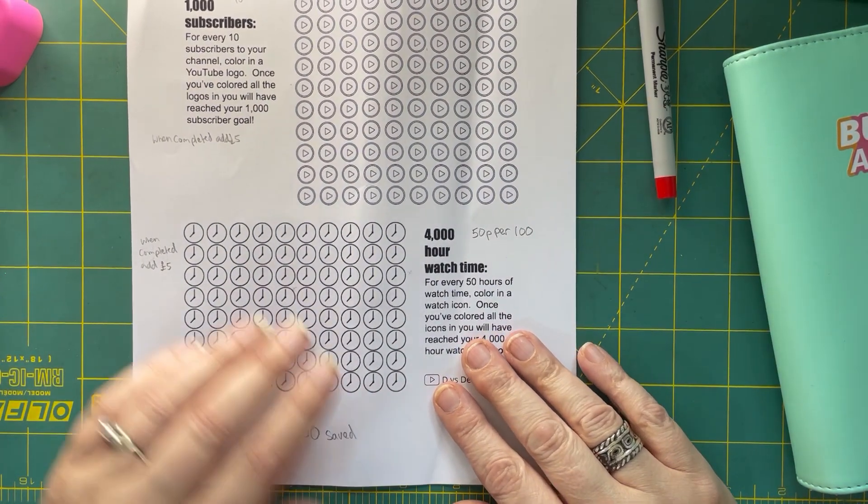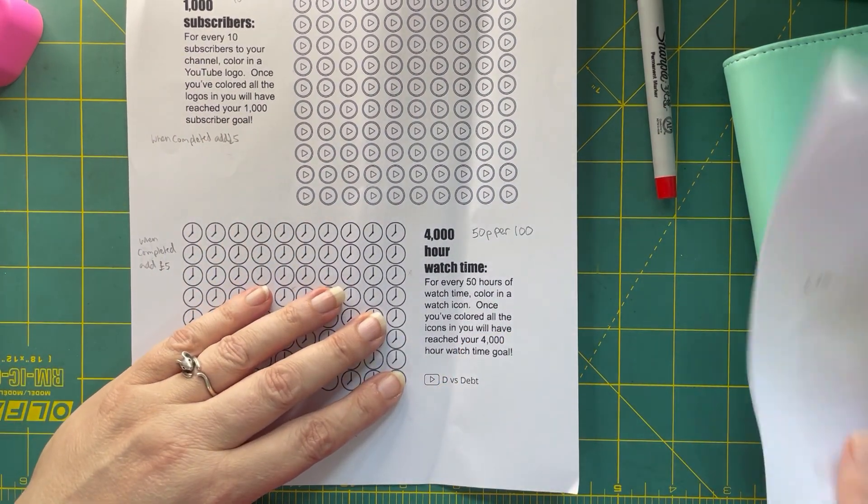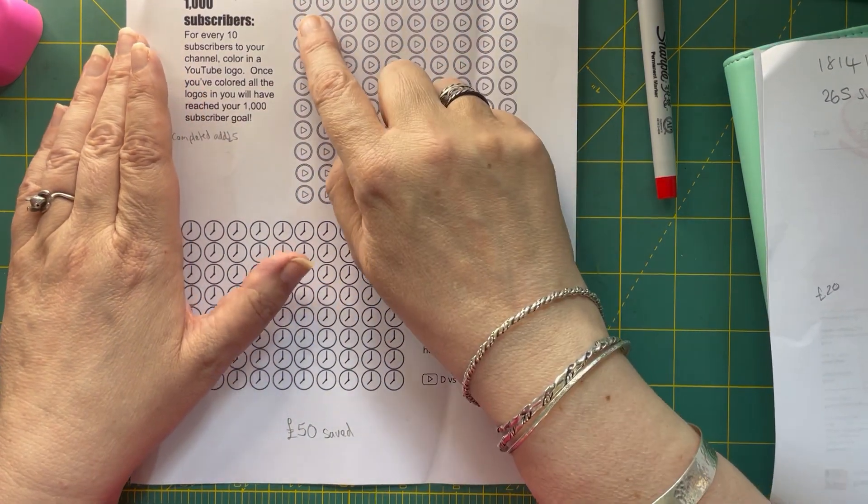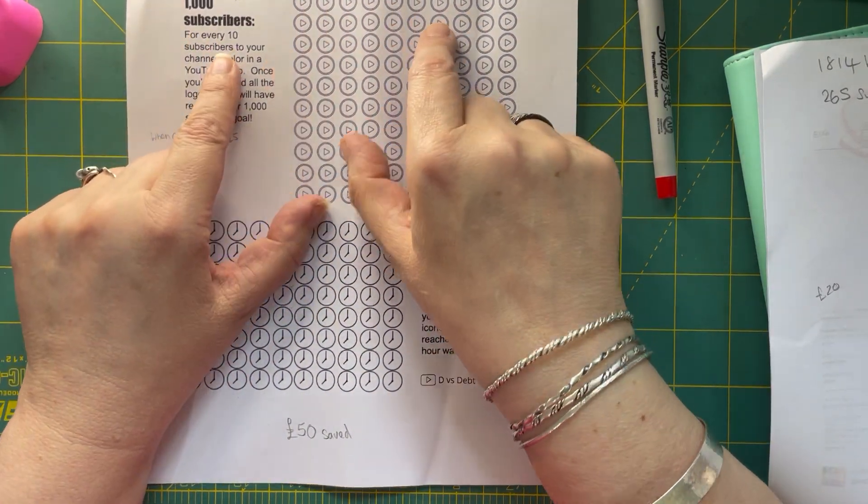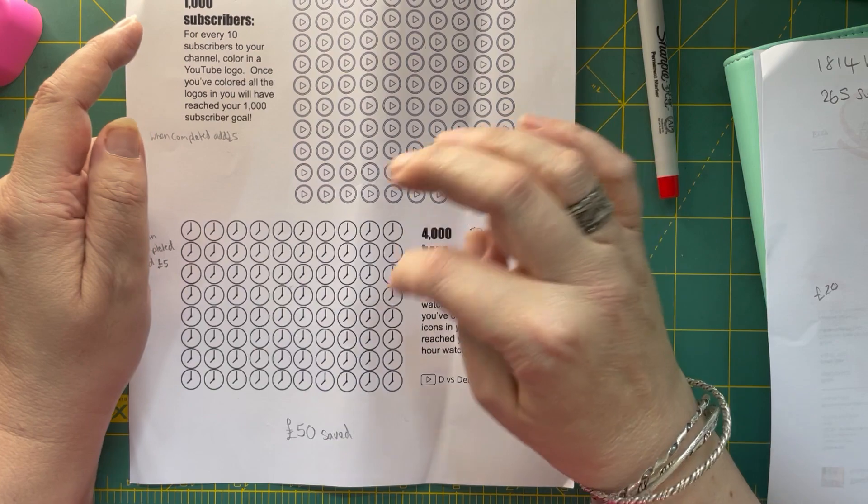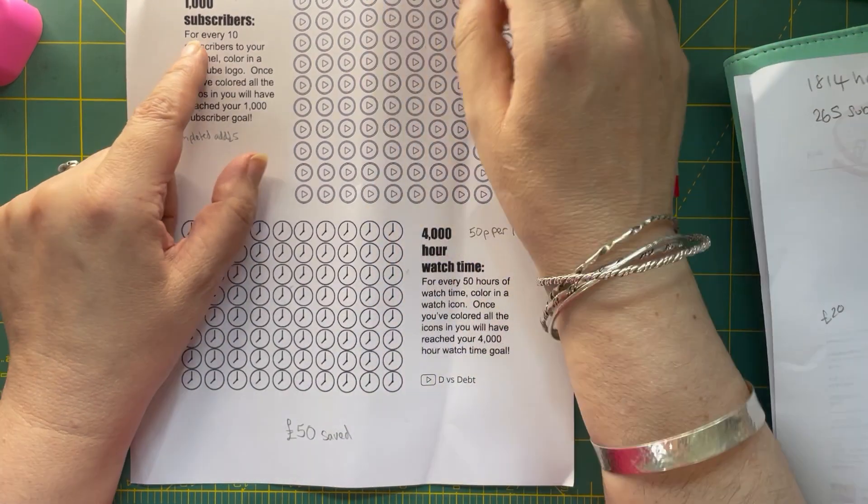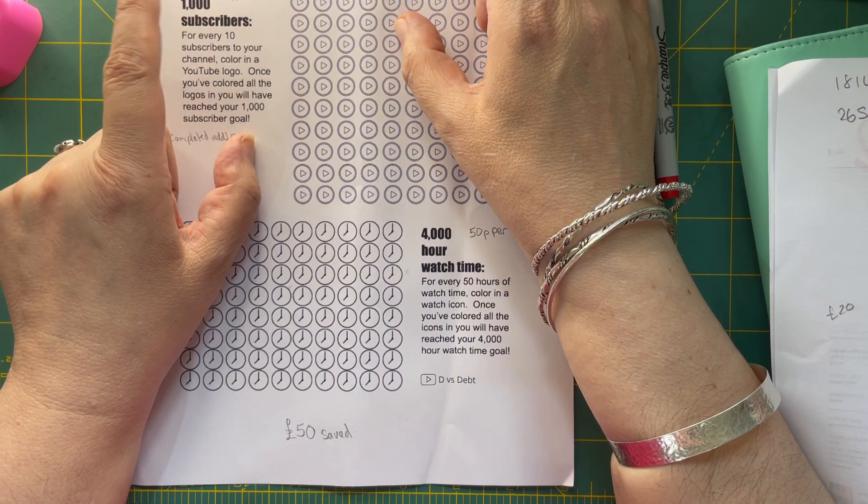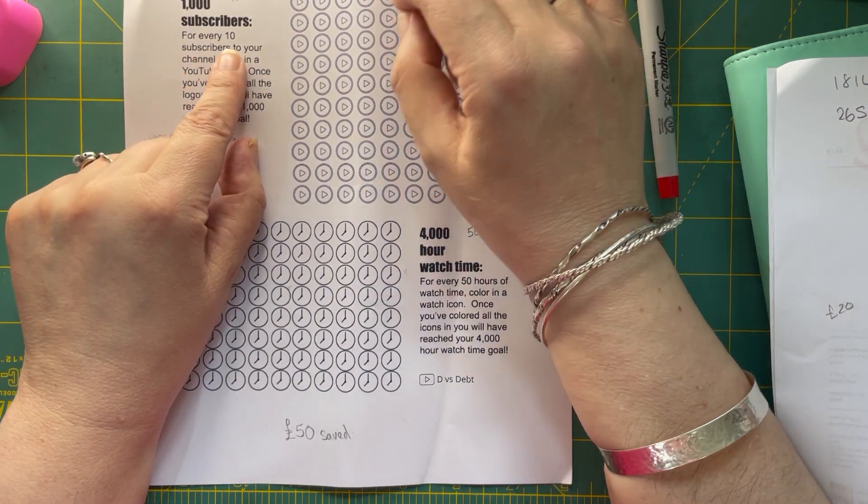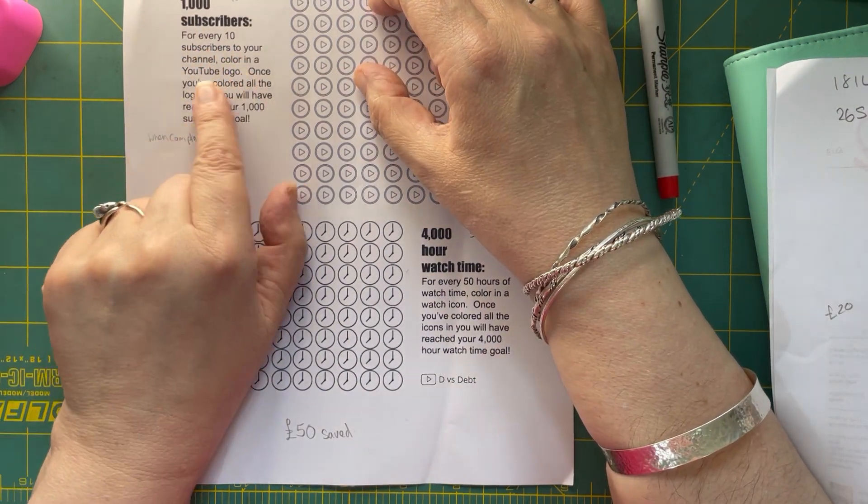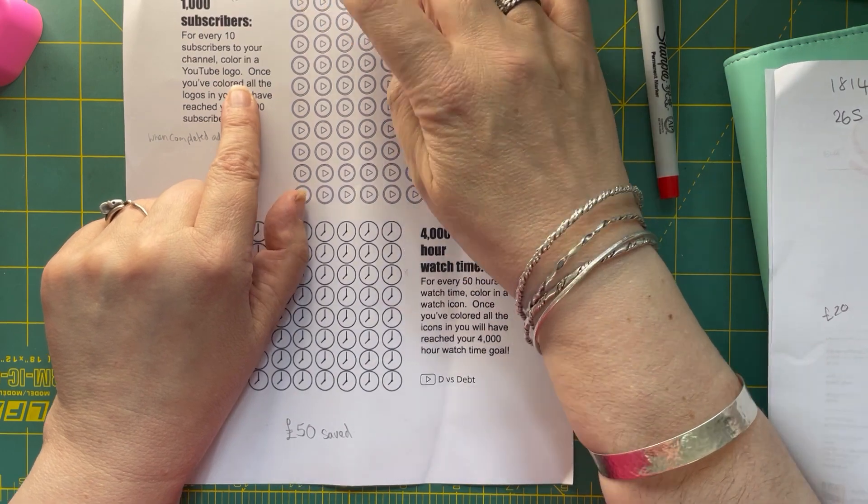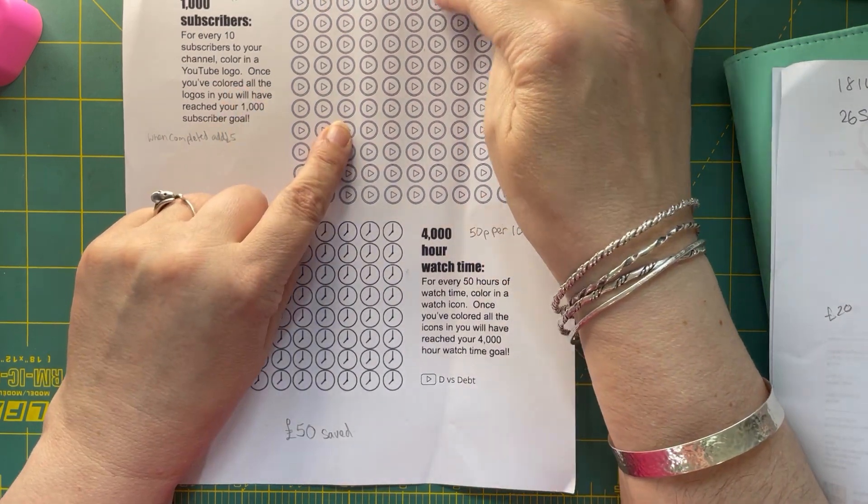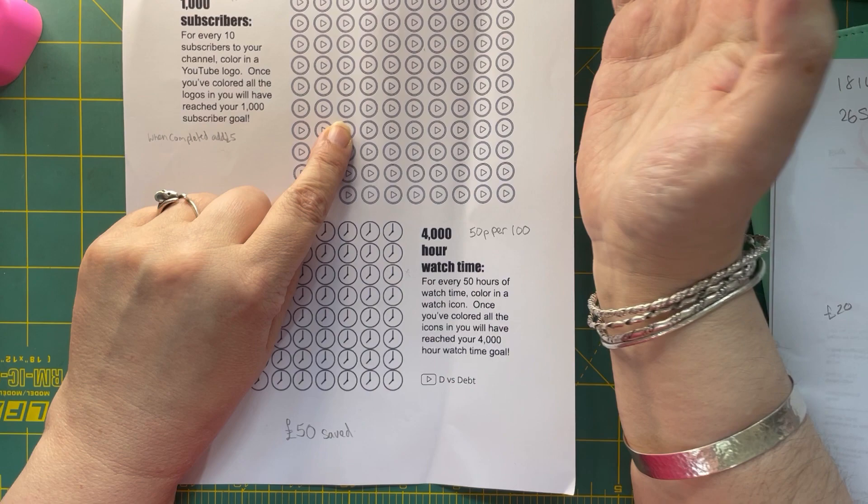So I've been working this out. It says 1,000 subscribers is what I need to get monetized and 4,000 watch hours. So 1,000 subscribers, for every 10 subscribers to your channel, color in a YouTube logo. So that's 10, 20, 30, 40, 50, 60, 80, 90, 100.